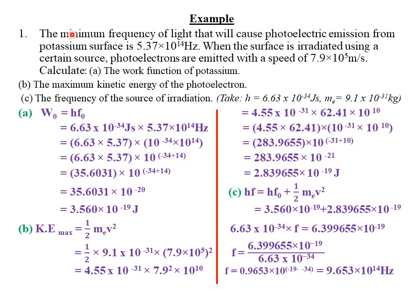Our first example states: the minimum frequency of light that will cause photoelectric emission from a potassium surface is 5.37 × 10¹⁴ Hz. When the surface is irradiated using a certain source, photoelectrons are emitted with a speed of 7.9 × 10⁵ m/s. Part (a): calculate the work function of potassium.